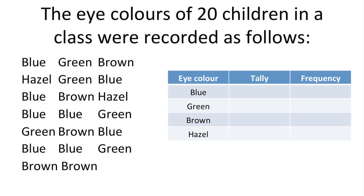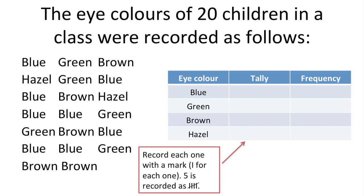We have clearly labelled our four different eye colours: blue, green, brown and hazel. We then have our tally column, using that five bar gate method of recording where each mark represents one student. We would record five students as four marks with a diagonal mark going through them. Our final column is the frequency column — that is the amount of students with each eye colour — so we add up all our tally marks to work out our frequency.